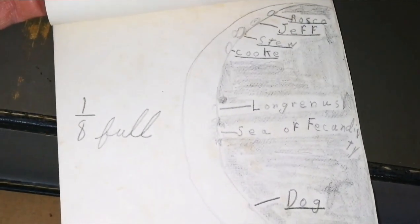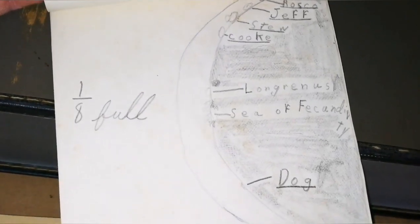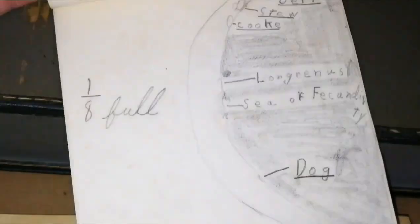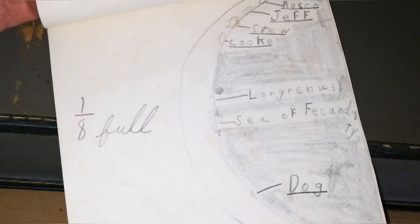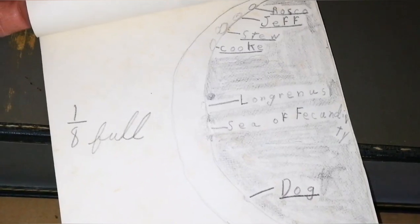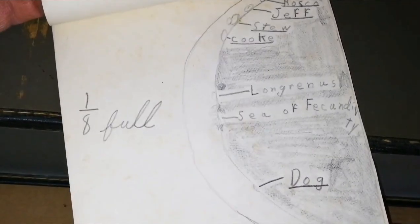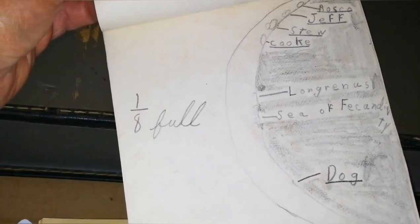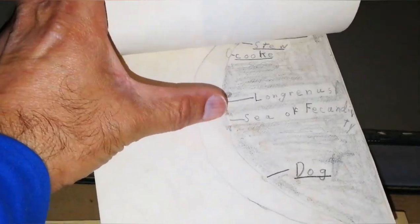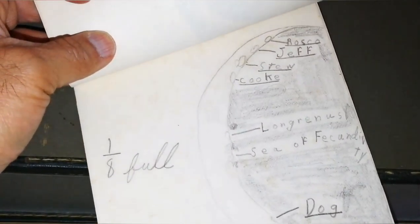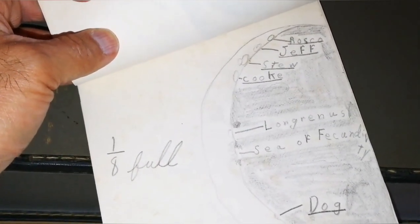What's that dog feature? This is Fecunditatis, Theophilus, and that is Langranus. He was observing the meridian. That line is meridian. What is that dog? I have to find it. Stauffel, Roscoe, all these names.